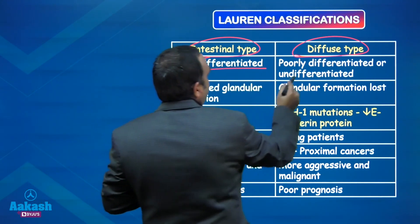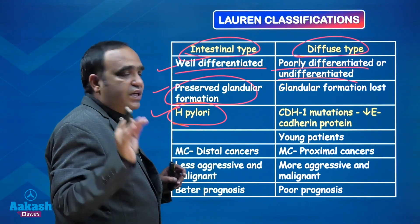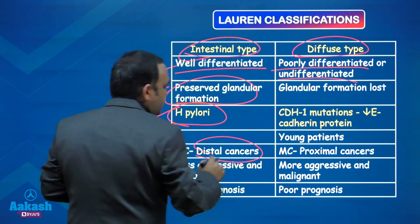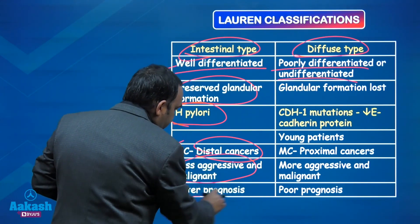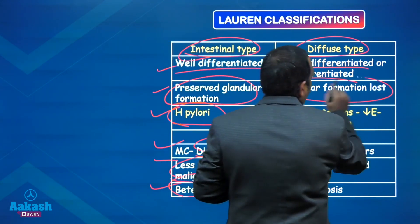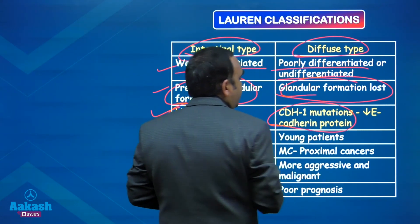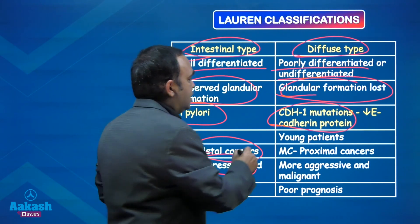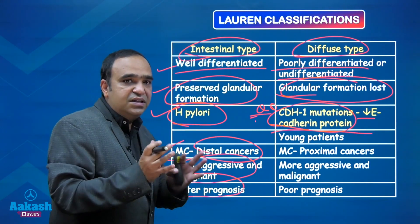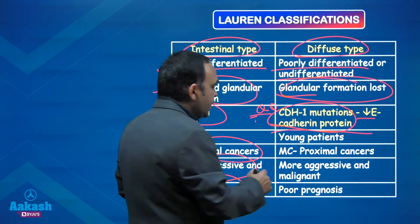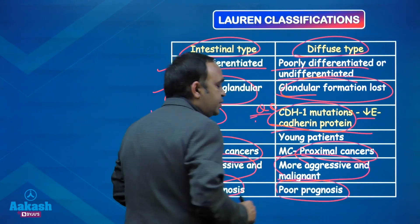The intestinal type is well differentiated, associated with H. pylori infections, mostly seen in the enteropyloric region - distal cancers - and is less aggressive with better prognosis. Diffuse type on the other hand has no glandular formation, is poorly or undifferentiated, mostly due to genetic changes - CDH1 mutations - leading to loss of E-cadherin protein. E-cadherin is required for cohesion of cells. Diffuse type is mostly seen in proximal sites like fundus and body, is more aggressive, and has poor prognosis.